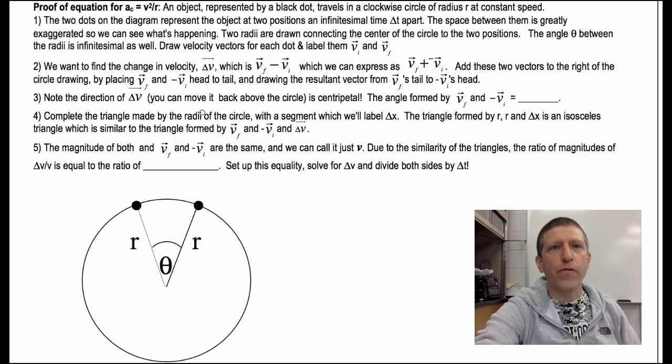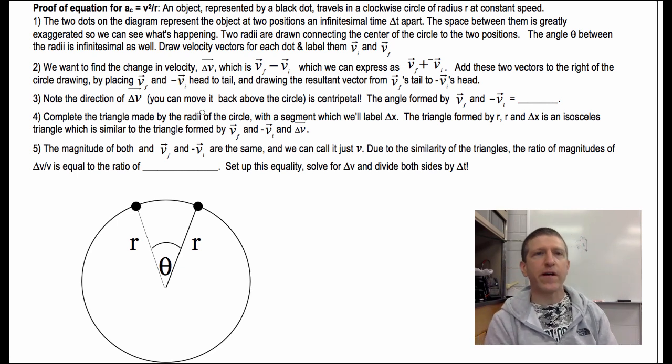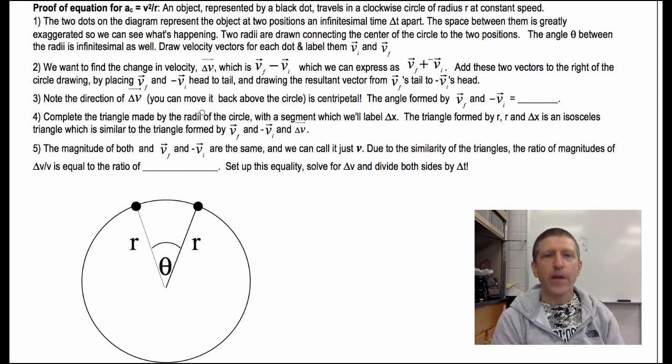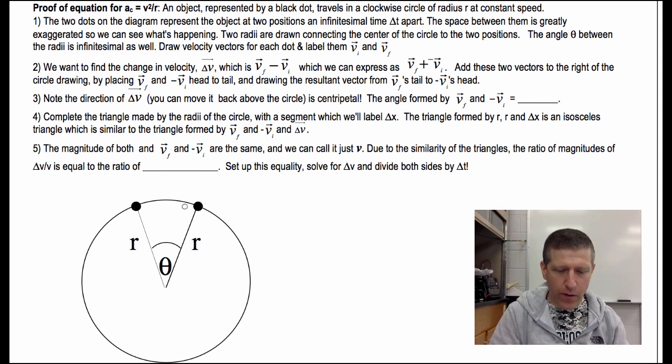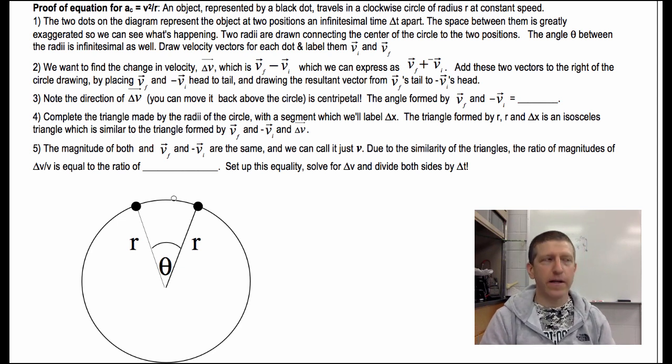Okay, so here is the proof that AC equals centripetal acceleration. And remember, it's centripetal towards the center, or center seeking, is V squared over R. So I've got an object here represented by these black dots right here and right here. It travels in a clockwise circle, going around this way, of radius R at constant speed. Now, the two dots in the diagram represent the object at two positions, which are an infinitesimal time apart. What does infinitesimal mean? Infinitely small.